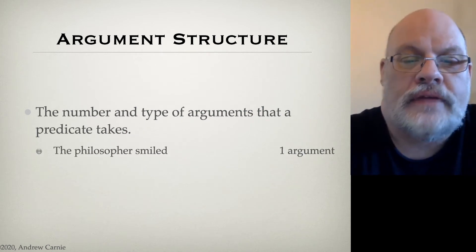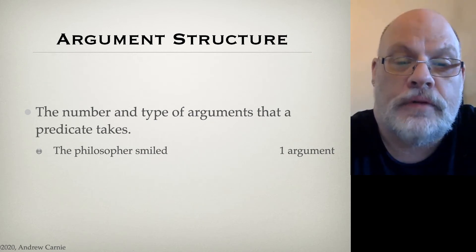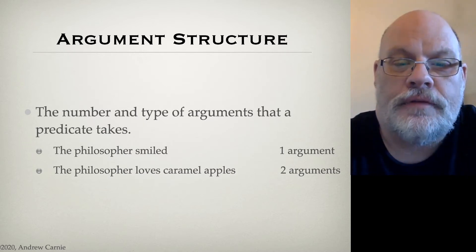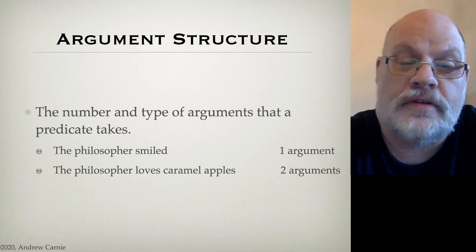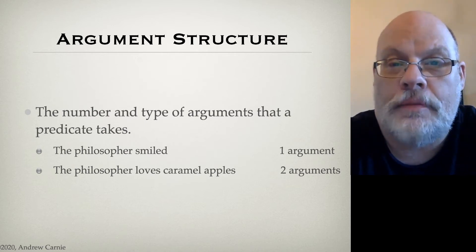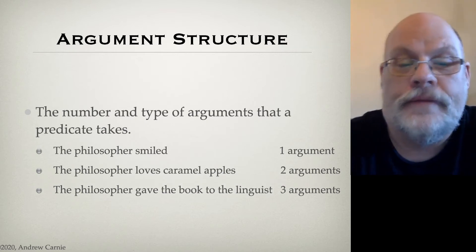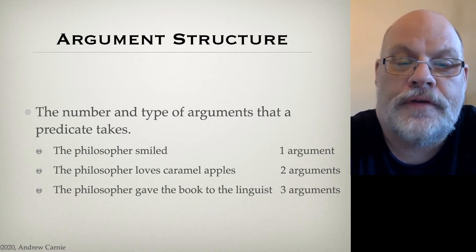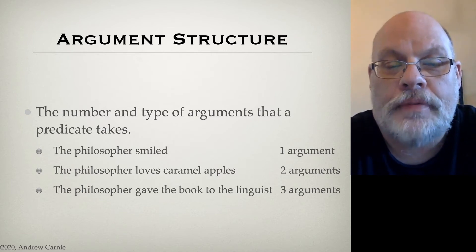Take a sentence like the philosopher smiled. The verb smile takes one argument — a noun phrase, the subject argument: the philosopher. Contrast that with loves, which takes two arguments: a subject and an object — the philosopher loves caramel apples. We also have predicates like give. The philosopher gave the book to the linguist has three arguments: the noun phrase subject the philosopher, the noun phrase object the book, and the prepositional phrase indirect object to the linguist.